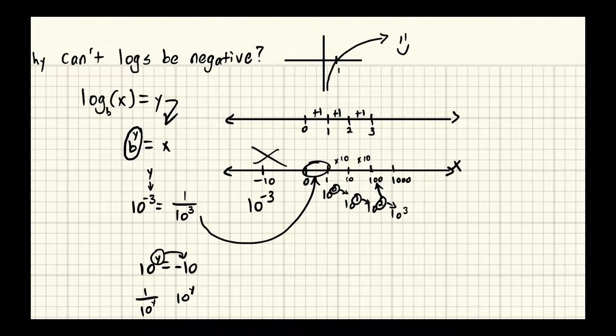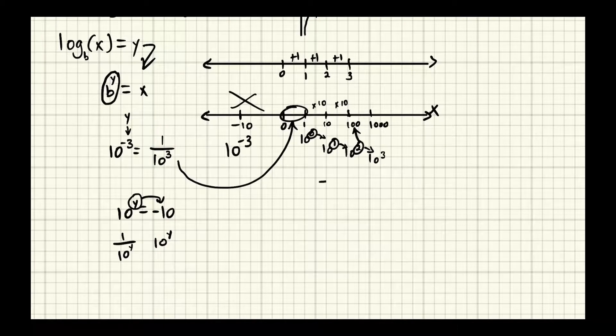But this is precisely why the graph looks like this. This is why this region becomes more and more negative, because look at this. The bigger we make y, so let's say we take 10, we take 10 to the negative a bunch, a huge number.